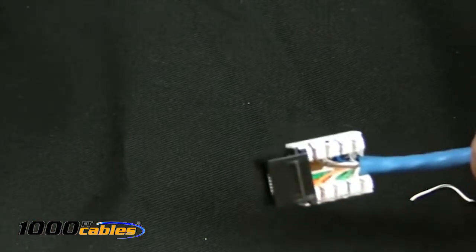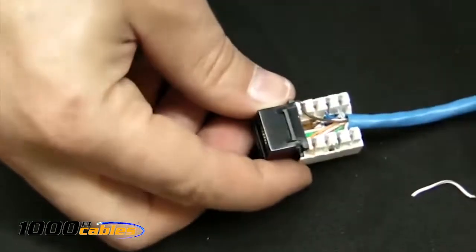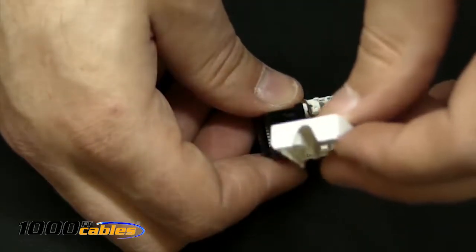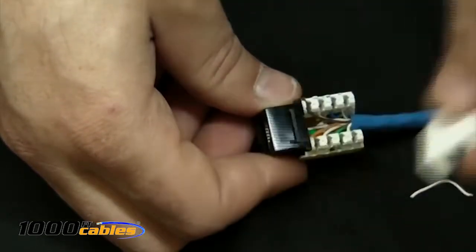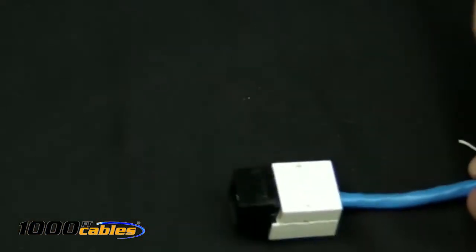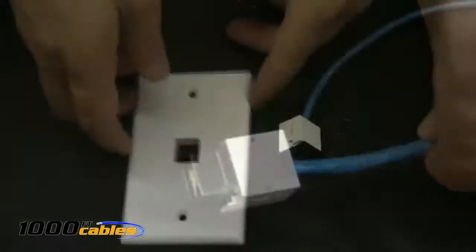There, we have our completed Cat5 keystone jack. So what you're going to want to do, you're going to want to take your dust cover, this one right here, and you're going to want to place this end over the Cat5 cable, like so, so you don't have to worry about any electrical interference. There, you have your Cat5 keystone jack complete.